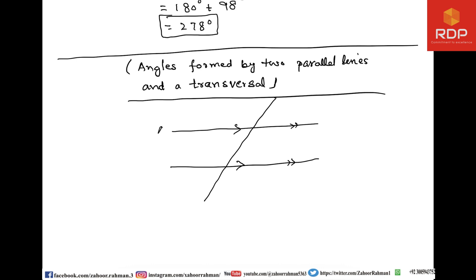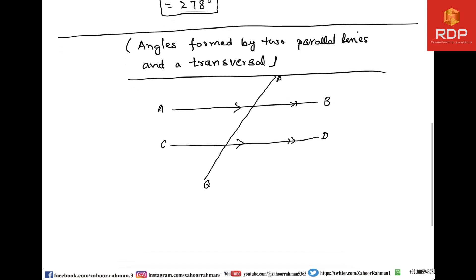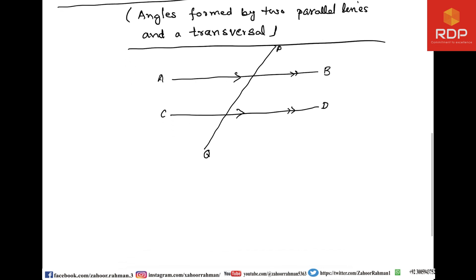When another line cuts two parallel lines at an angle, it is called a transversal line. If AB and CD are the parallel lines, then PQ is a transversal line, and there are many angles they can create. In fact, they create three different types of angles.